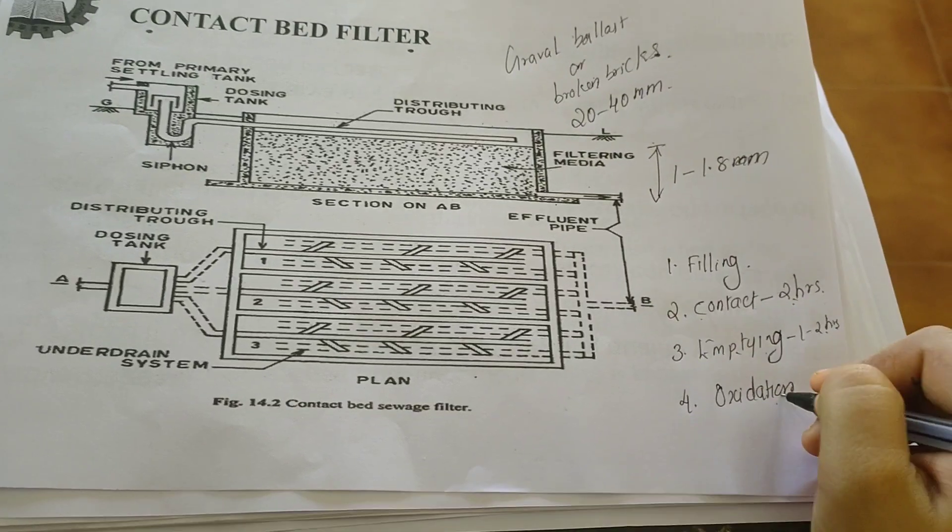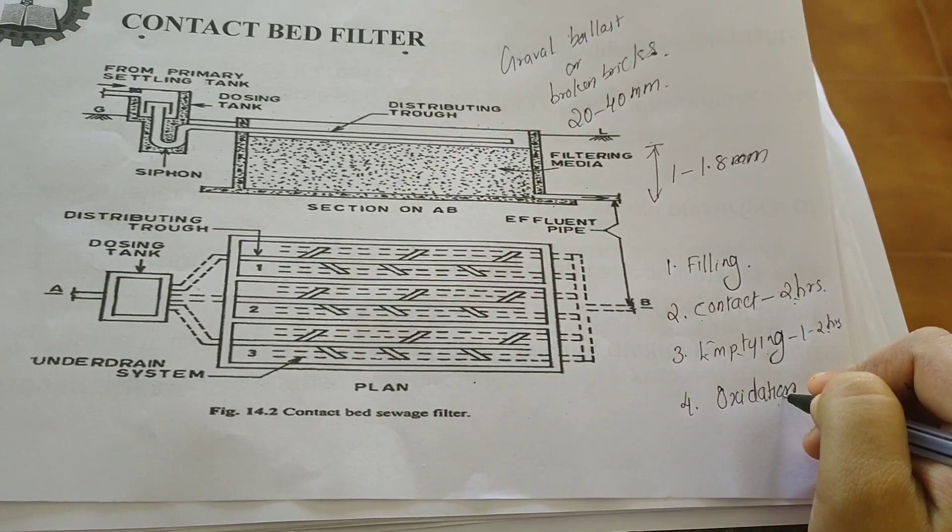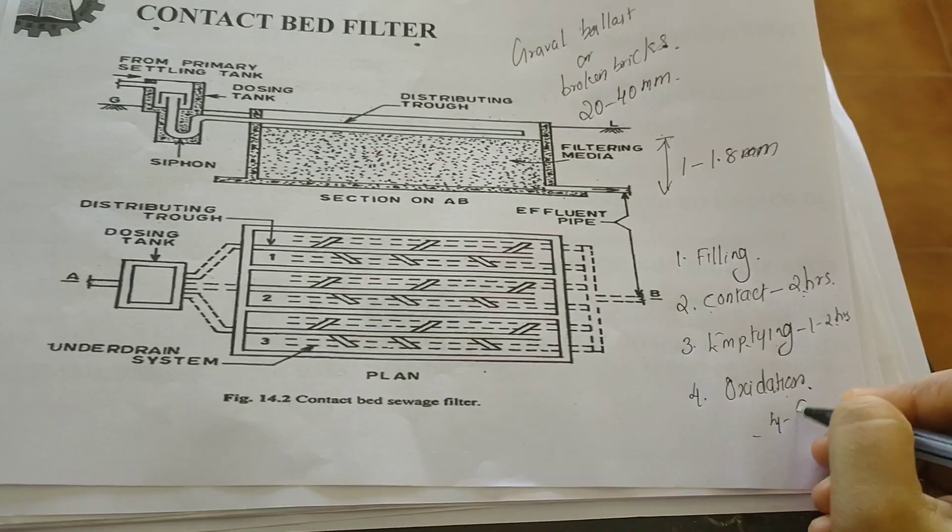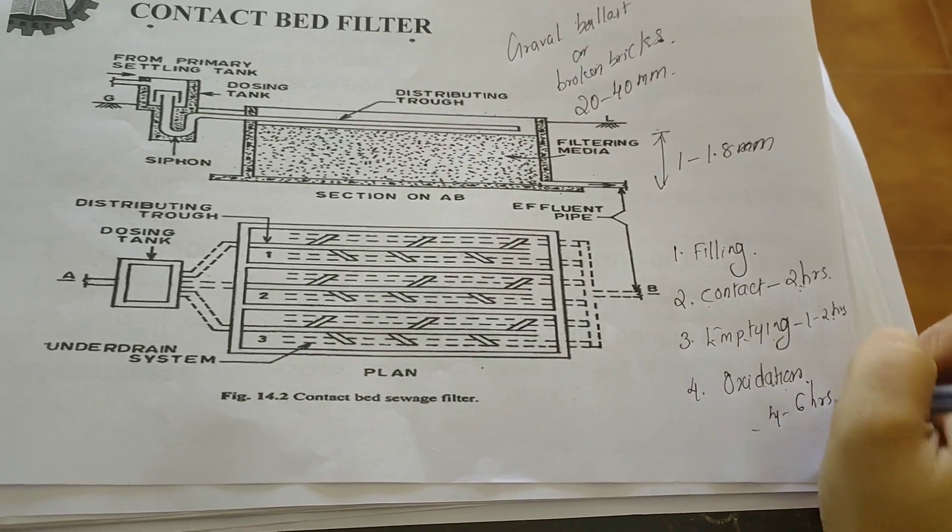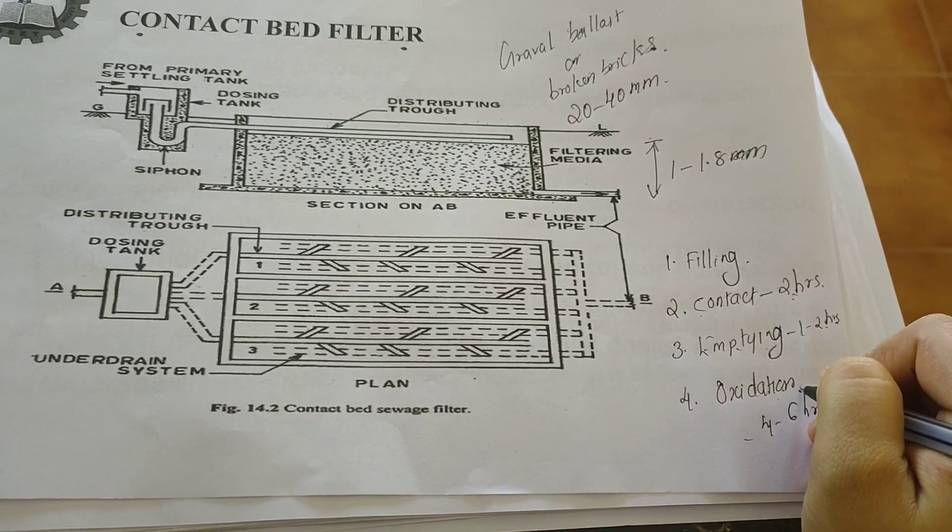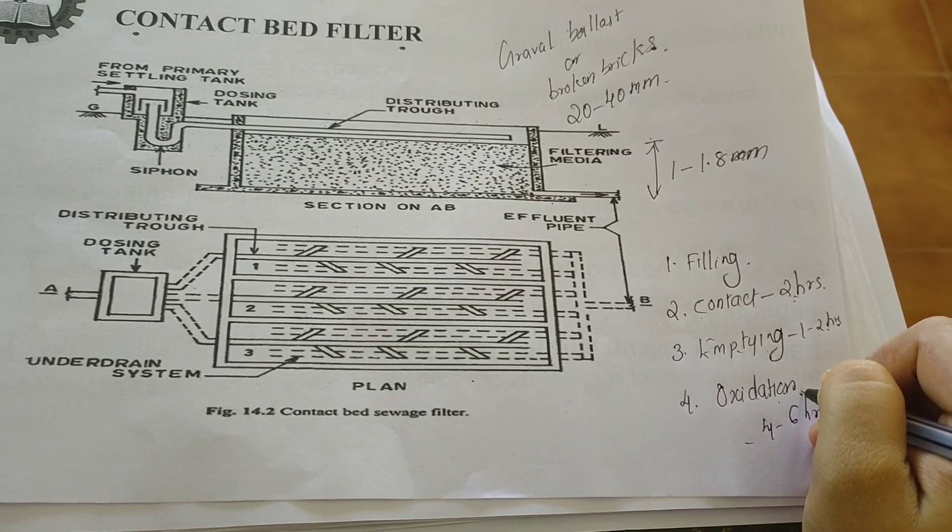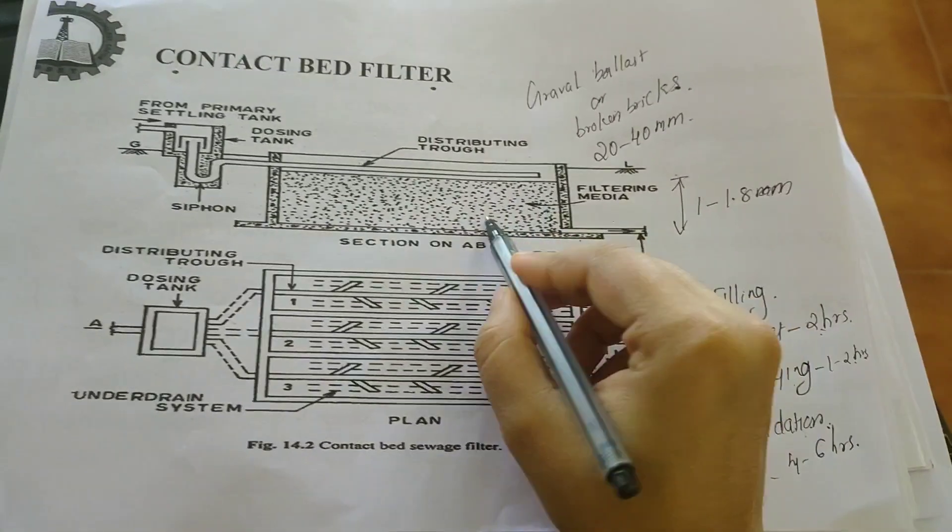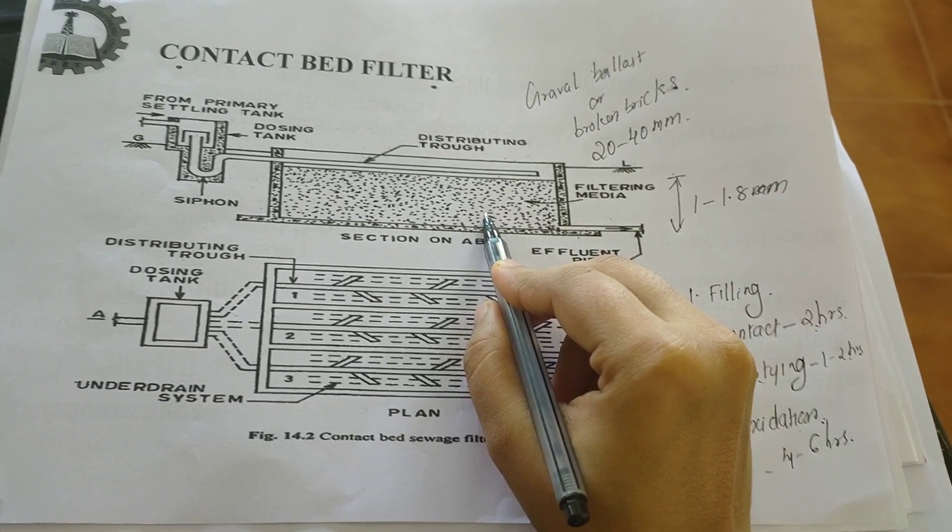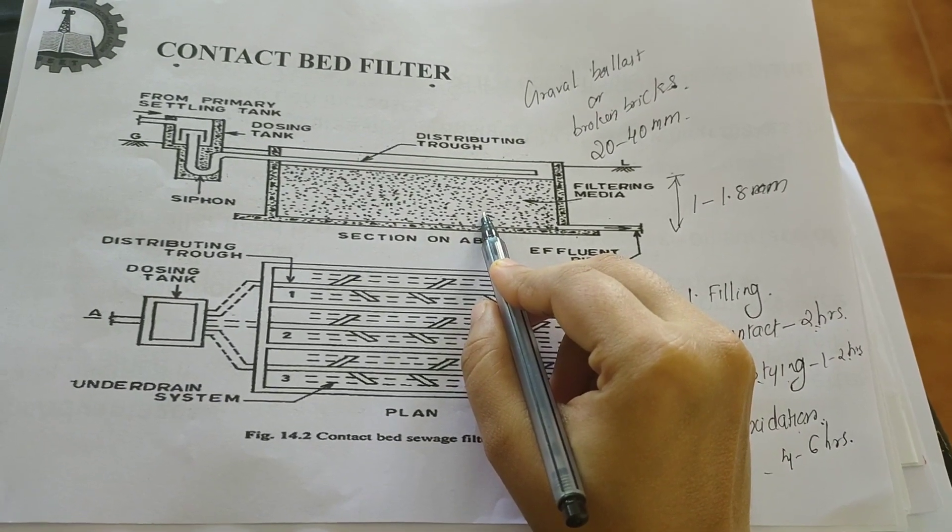Now the last phase is oxidation. In this, the contact bed stands empty for about 4 to 6 hours. This is known as the second contact period. In this rest period, atmospheric oxygen enters into the voids of the filter media. This oxygen will be used for the decomposition of organic matter by aerobic bacteria.